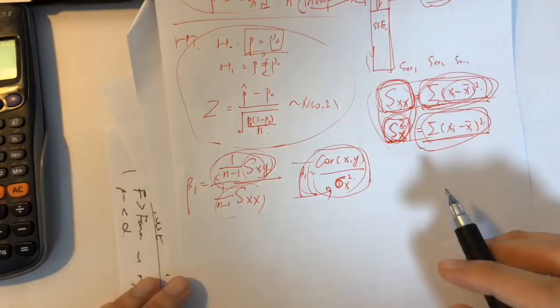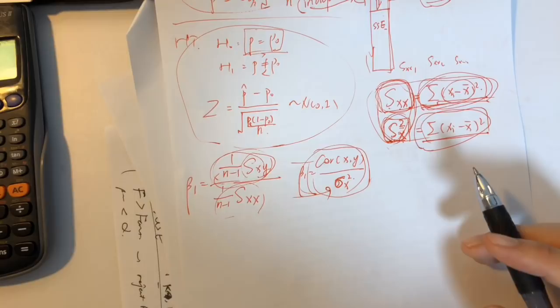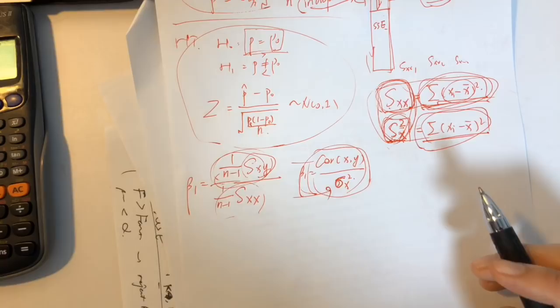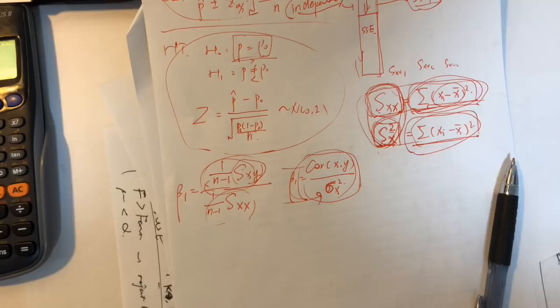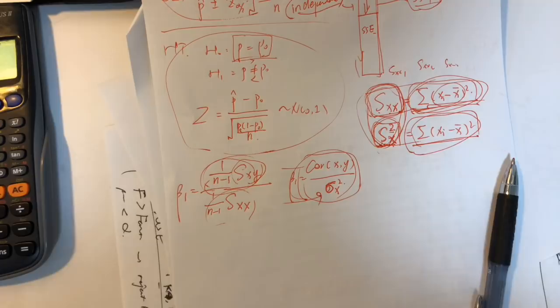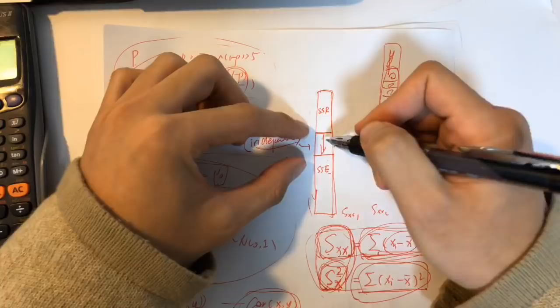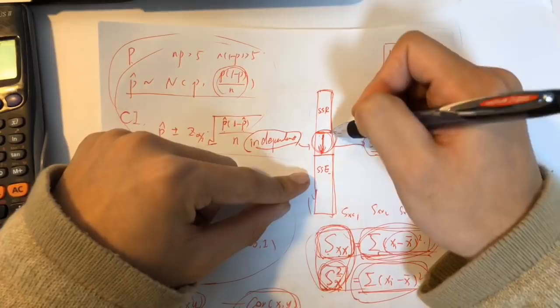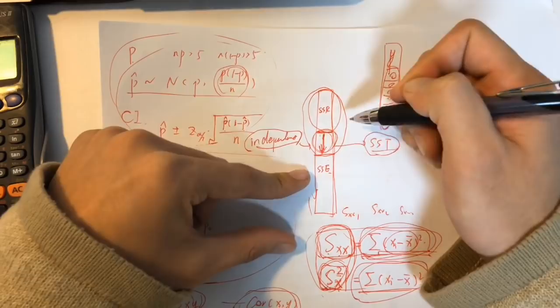For multicollinearity, if the correlation between two independent variables exceeds 0.95, there is very likely a multicollinearity problem. For SST, SSR, SSE: SST is always fixed; in a reduced model there is less SSR (and more SSE), while in the full model there is more SSR (and less SSE).